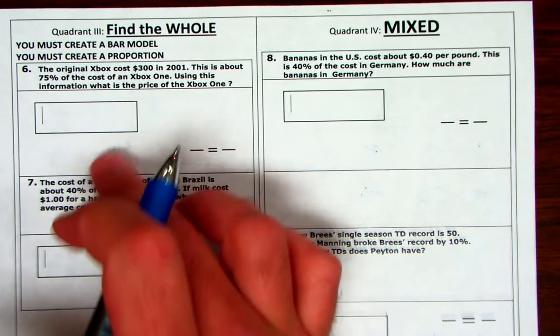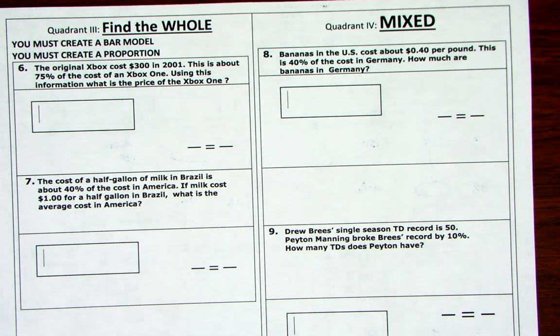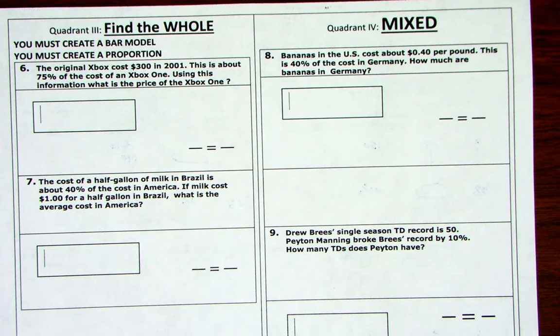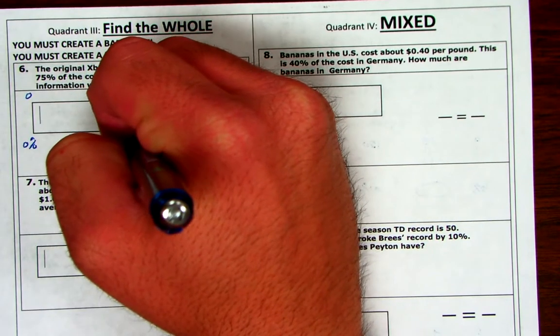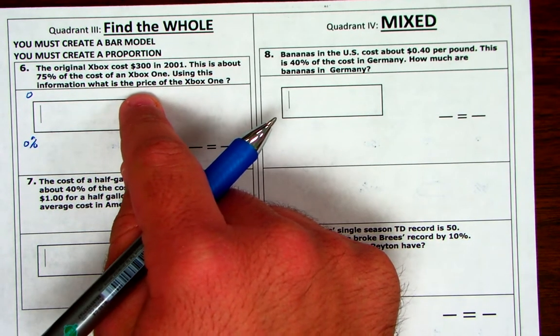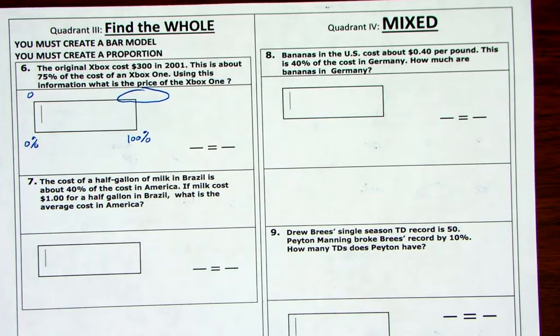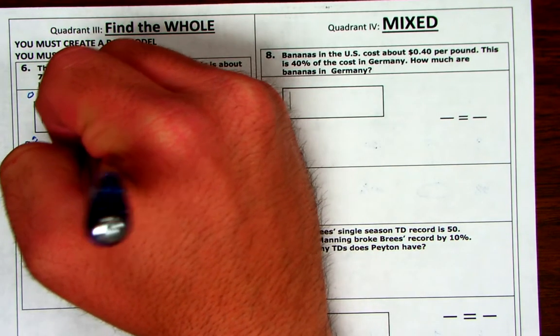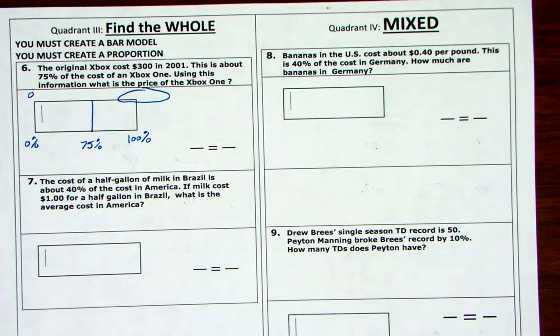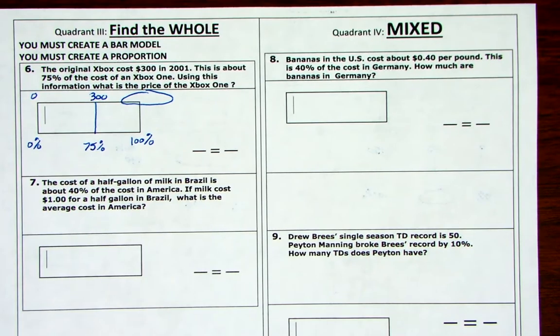So finding the whole. I'm going to do these two right here. Just setting up. The original Xbox cost $300 in 2001. This is about 75% of the cost of an Xbox One. Using this information, what is the price of the Xbox One? Well, guys, it gives you some key information. First of all, 100% represents the whole. The whole would be the cost of the Xbox One. Do we know what it is? No. It says, what is the price of the Xbox One? So we're solving for the whole. It gives you a percent. What percent does it give you? It gives you 75%. And what value represents 75%? Well, the original cost was $300. I set it up. You go solve it.